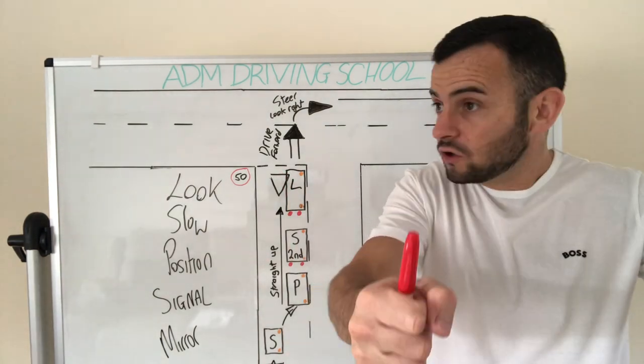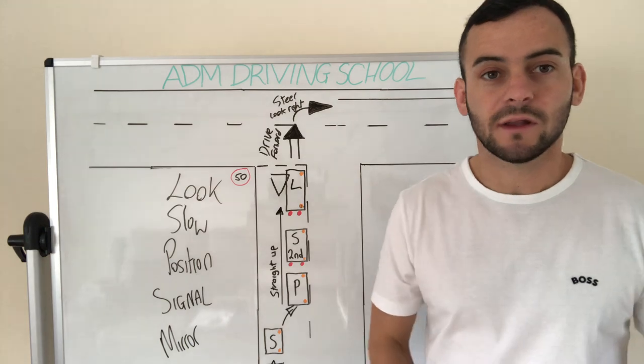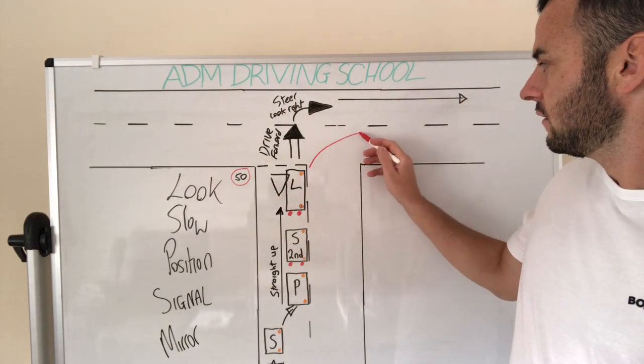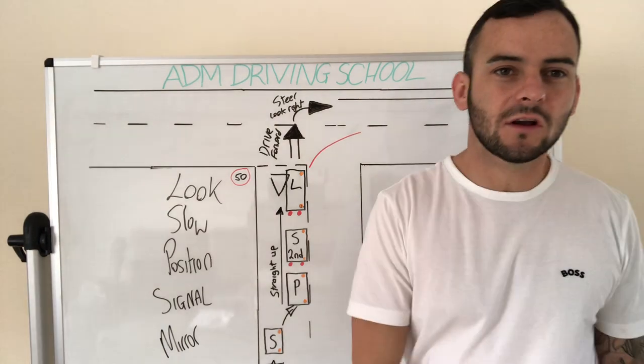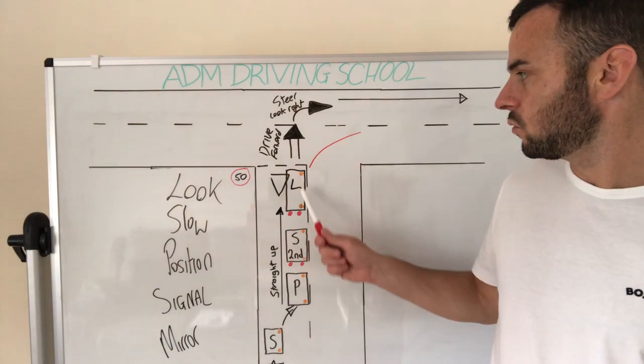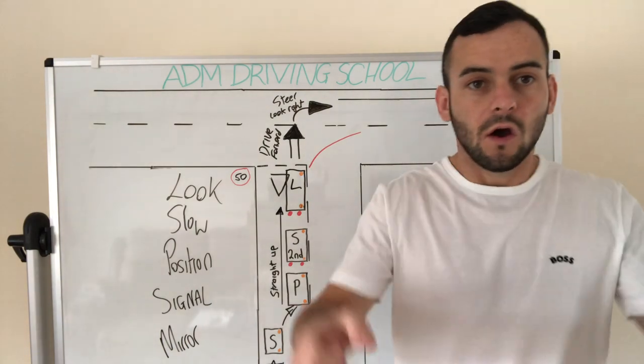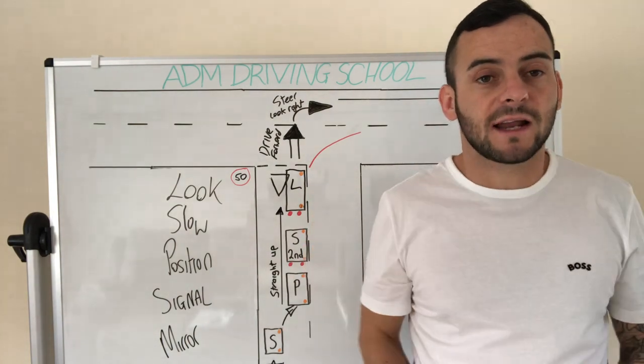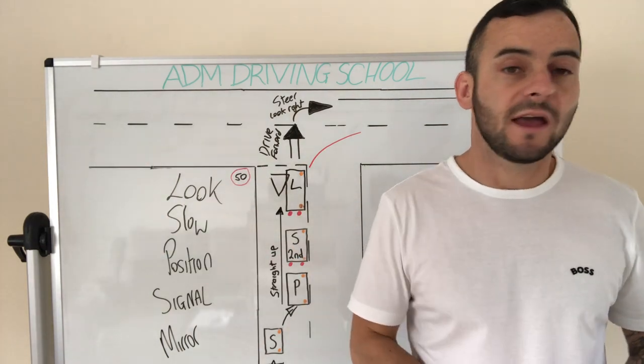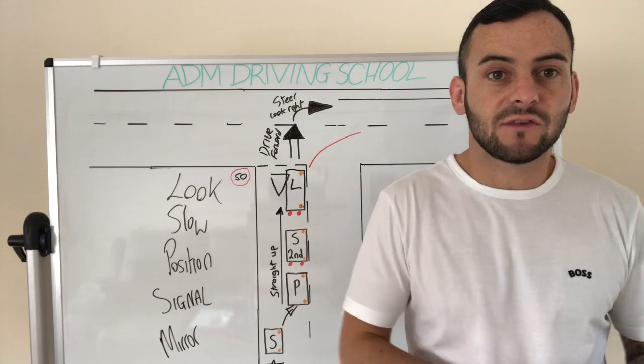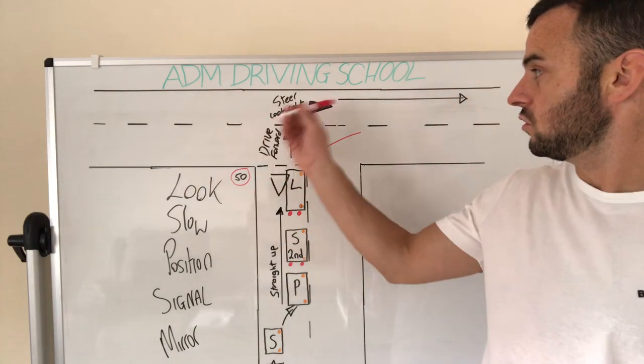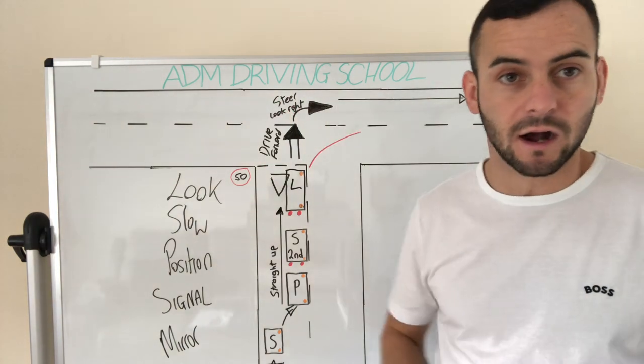Then you're looking right and left. Once there's no cars coming, it's important that we don't steer from here. You don't want to do that. You're still cutting the corner in that sense. So what you're going to do is you drive up towards the centre line. Just before you steer, you can have your quick glance to the left. But once you're about to steer, just looking where you're going.